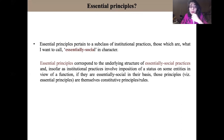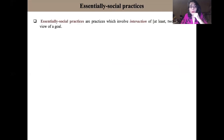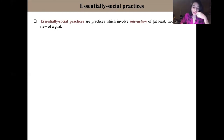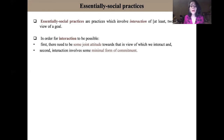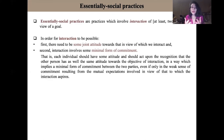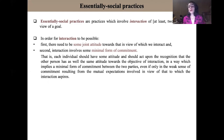How can I characterize essentially social practices? I want to define essentially social practices as those which involve human interaction — those which involve interaction between people in view of a goal. For interaction to be possible, two conditions should be met. First, there need to be some joint attitude towards that in view of which we interact. And second, interaction involves some minimal form of commitment. If two individuals interact, each individual should have some attitude and should act upon the recognition that the other person has as well the same attitude towards the objective of interaction, in a way which implies a minimal form of commitment between the two parties.